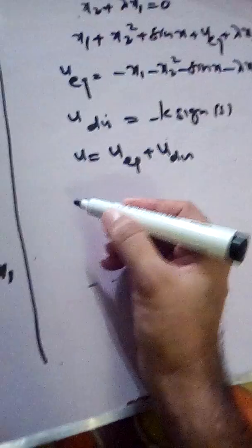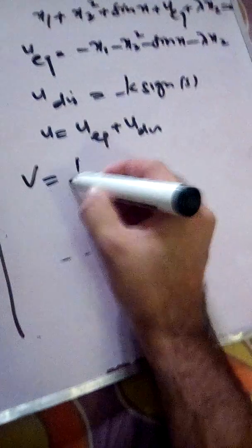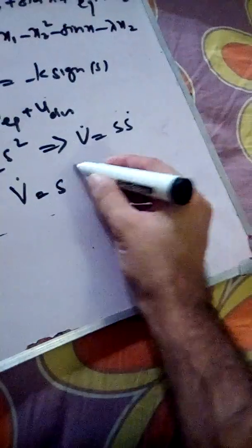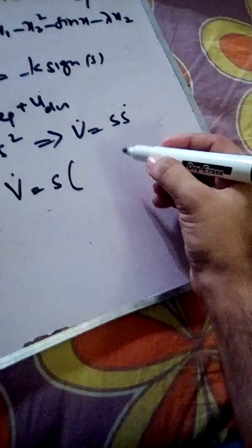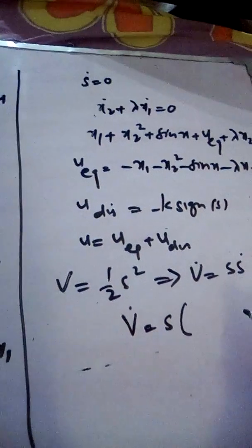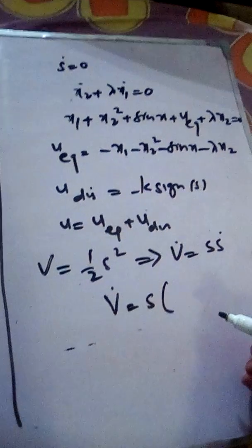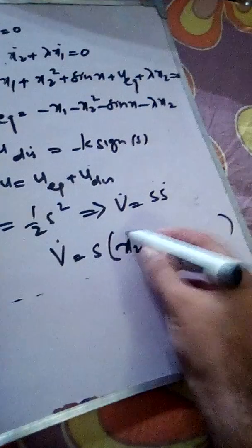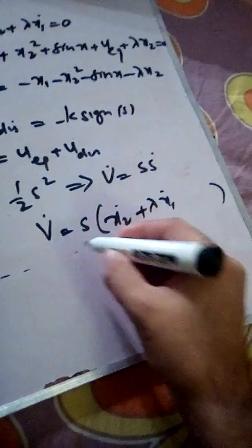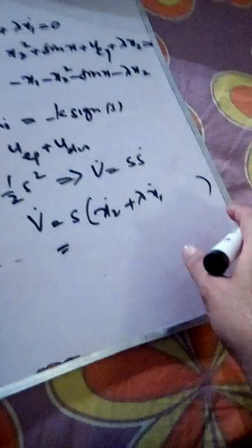Now let us verify this using the Lyapunov method. We define the Lyapunov variable V as one-half s squared. Its derivative is V_dot equals s times s_dot. We substitute s_dot, which is x2_dot plus lambda times x1_dot, and then insert the state equations and the complete control law.